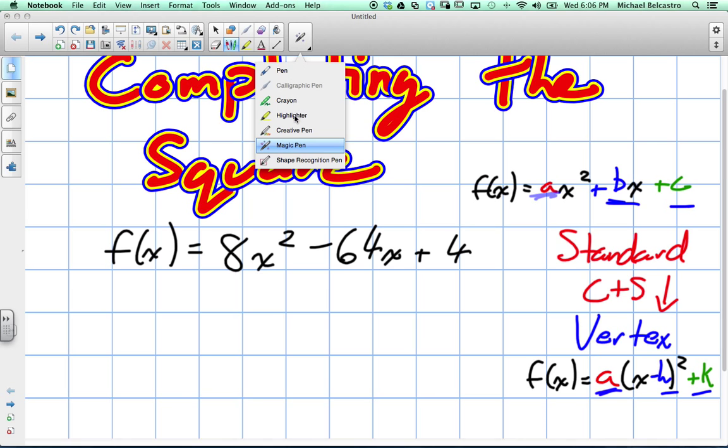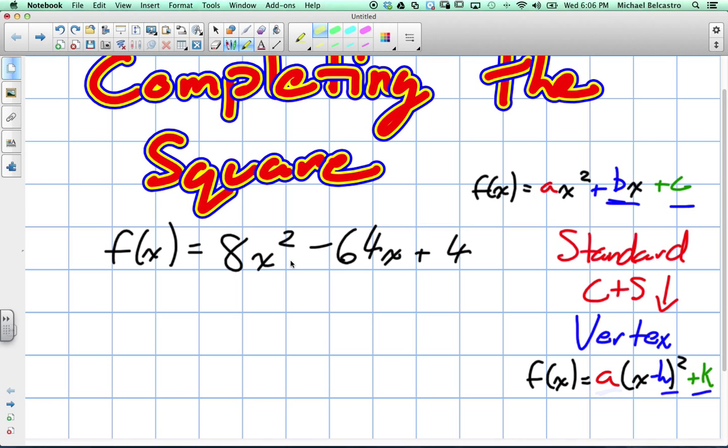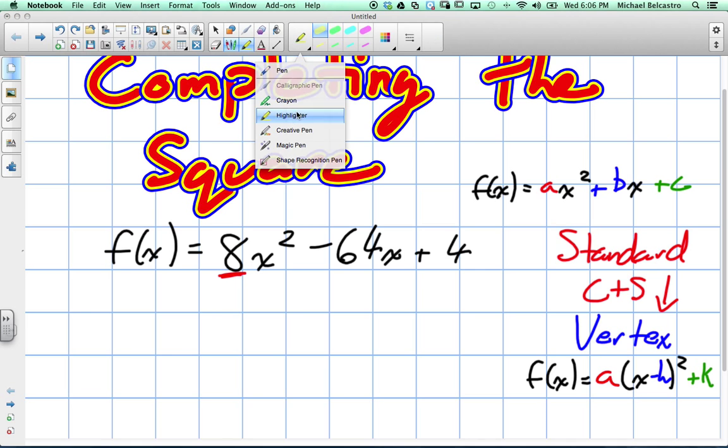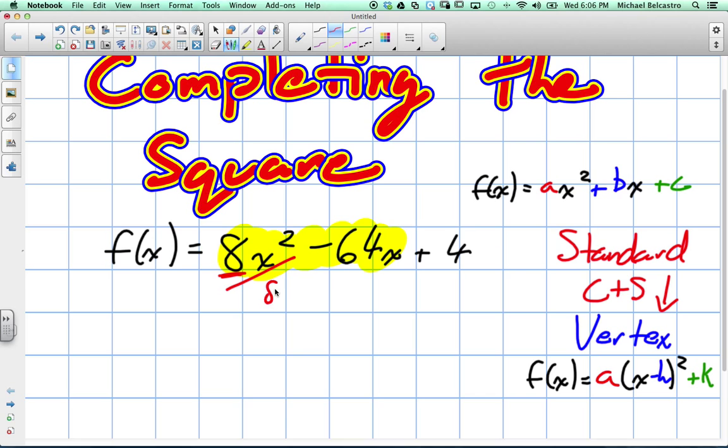Okay, so the very first thing we want to do is we want to take whatever value is in front of the x squared. So what's the coefficient in front of x squared? 8. We want to divide the first two terms by that value. Okay, so we want to divide both of these. This by 8 and this by 8. In fact, we're common factoring 8 out. Okay, so we get f at x is equal to, and we common factor that value comes to the front.